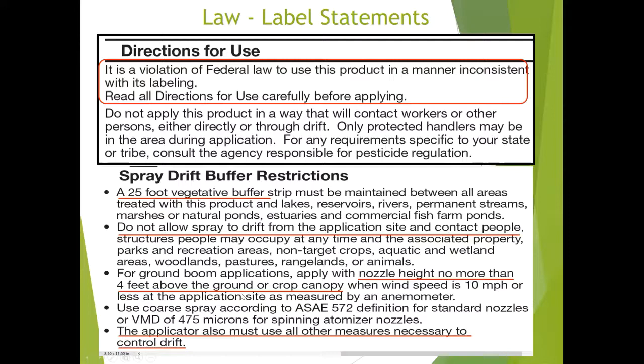Labels will also state how to make the application. For example, nozzle height is no more than four feet above the ground or crop canopy, and wind speed should be 10 miles per hour or less at the application site, measured by an anemometer — a wind speed device. As an applicator, you're responsible to make sure you're conducting the application in the safest way possible. You have to constantly evaluate weather conditions and general conditions to make applications that avoid drift.